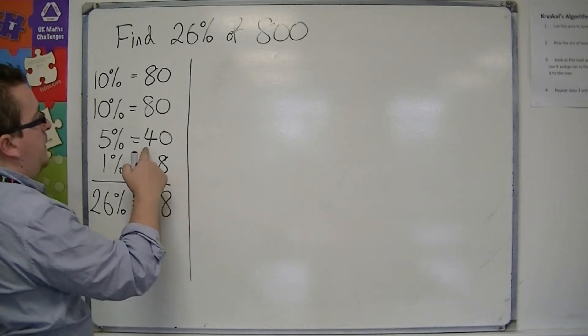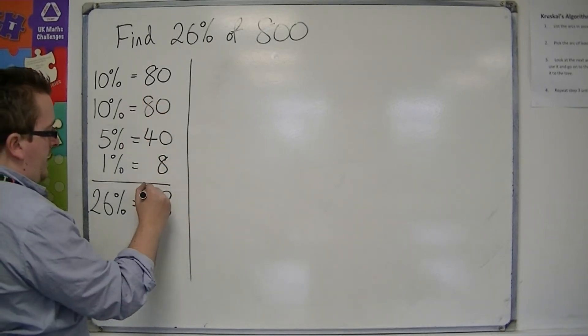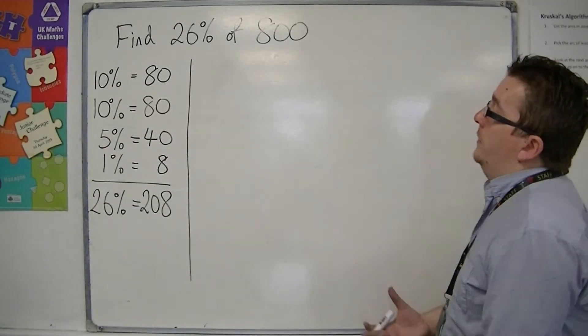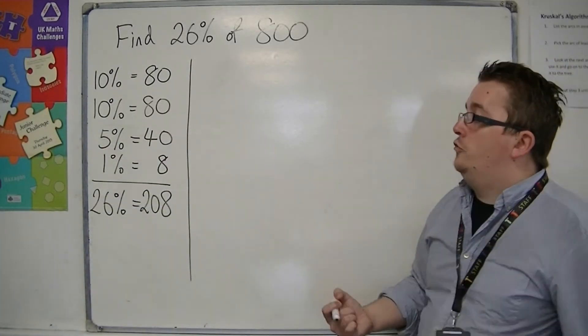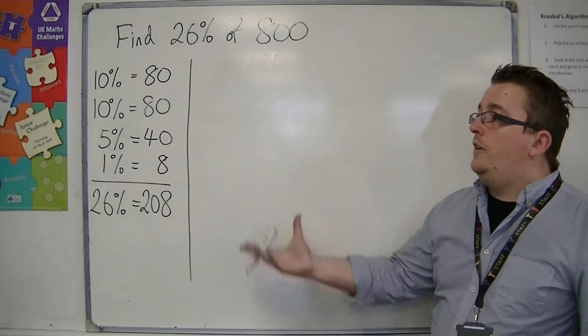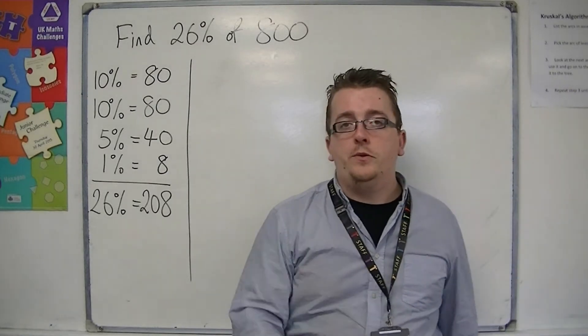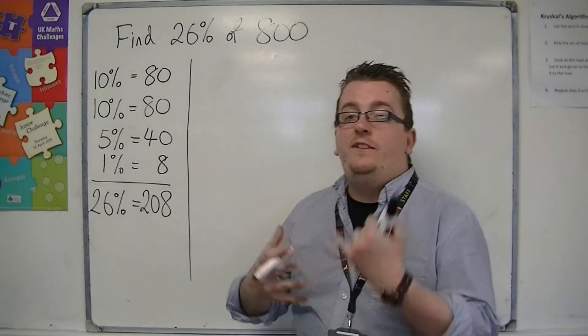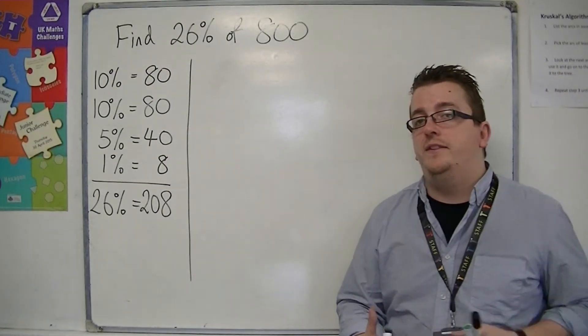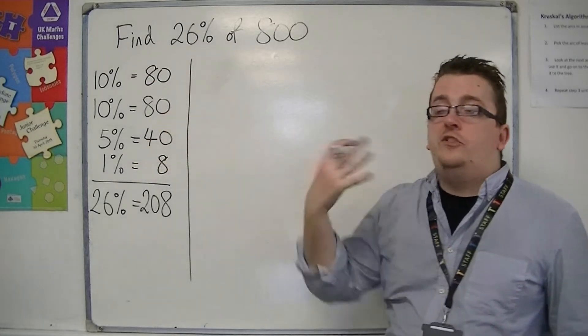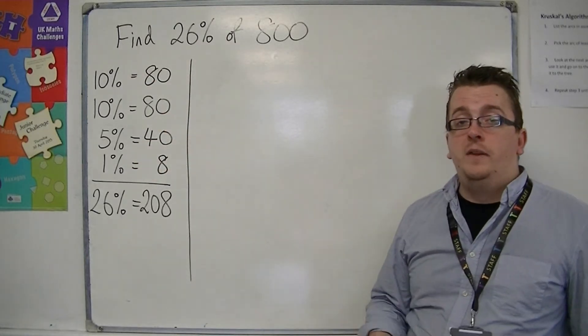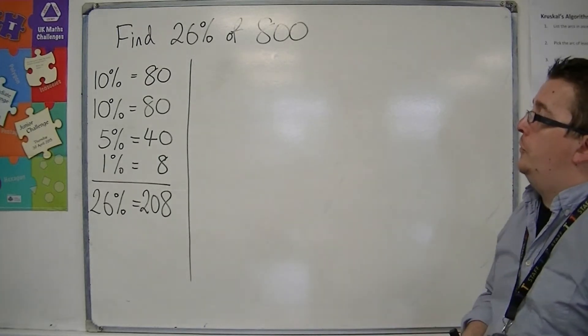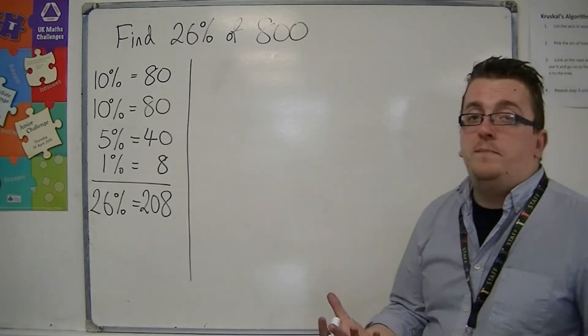So 208. So 208 is the answer. It's 26% of 800. That's one particular way that you can do it. Obviously, when you're getting into questions like find 87%, then the list of percentages that you need to find increases. And it can become a little bit convoluted, but it's really up to you whether you use it or not, because it does actually make sense.